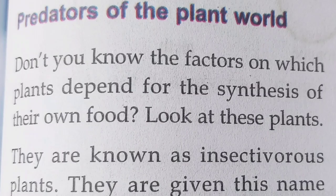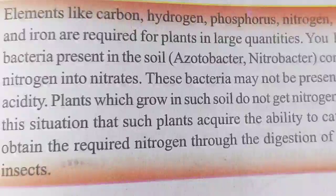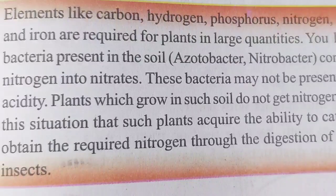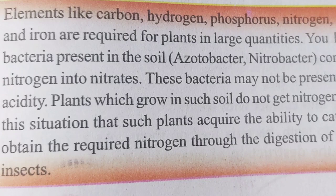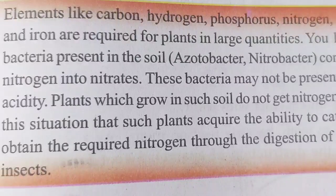Now let us see the predators of the plant world. Elements like carbon, hydrogen, phosphorus, nitrogen, sulfur, calcium, and iron are required for plants in large quantities. Certain bacteria present in the soil — acetobacter and nitrobacter — convert atmospheric nitrogen into nitrates. These bacteria may not be present in soil with high acidity, and plants which grow in such soil do not get nitrogen. It is to overcome this situation that such plants acquire the ability to catch insects. They obtain the required nitrogen through the digestion of the body of these insects. Sundew, Venus flytrap, and pitcher plants are examples of insectivorous plants.